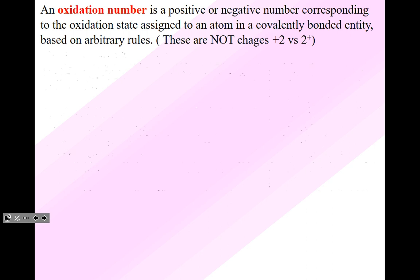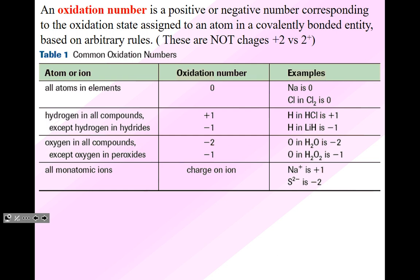Let's take a look at some examples — you have to know these. All atoms in elements have an oxidation number of zero. So sodium metal has an oxidation number of zero. Do not confuse sodium metal with a sodium ion — a sodium ion, Na+, has a charge or oxidation number of plus one. Chlorine in chlorine gas is an element, so it's still zero.